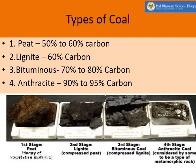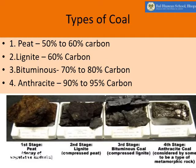The youngest coal is known as peat, which contains only 50 to 60 percent carbon; its moisture level is also high. As the coal matures, carbon content increases: in lignite it is 60 percent, in bituminous it is 70 to 80 percent, and in anthracite it is 90 to 95 percent carbon. In anthracite, the moisture level is very low, which is why it is considered the most mature coal. So peat is the youngest coal and anthracite is the oldest.